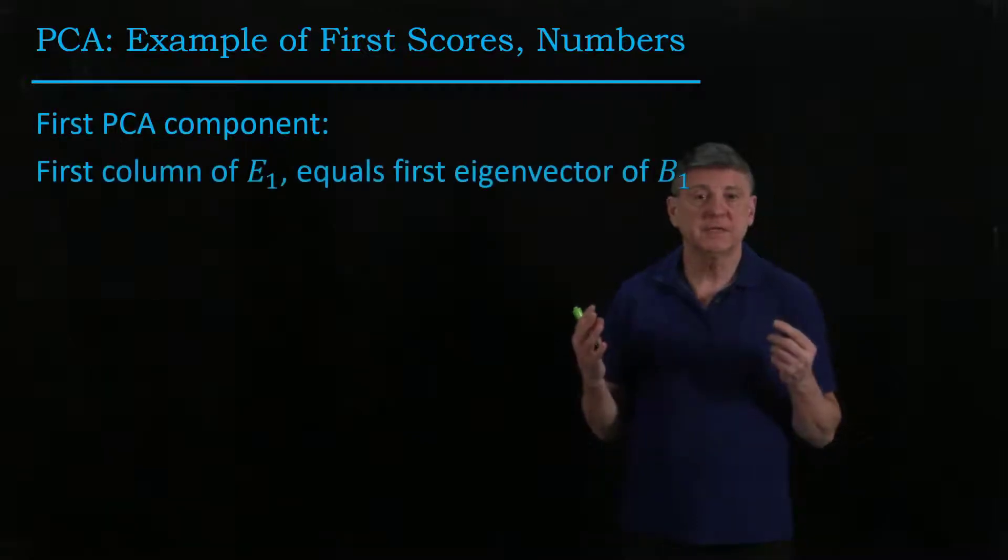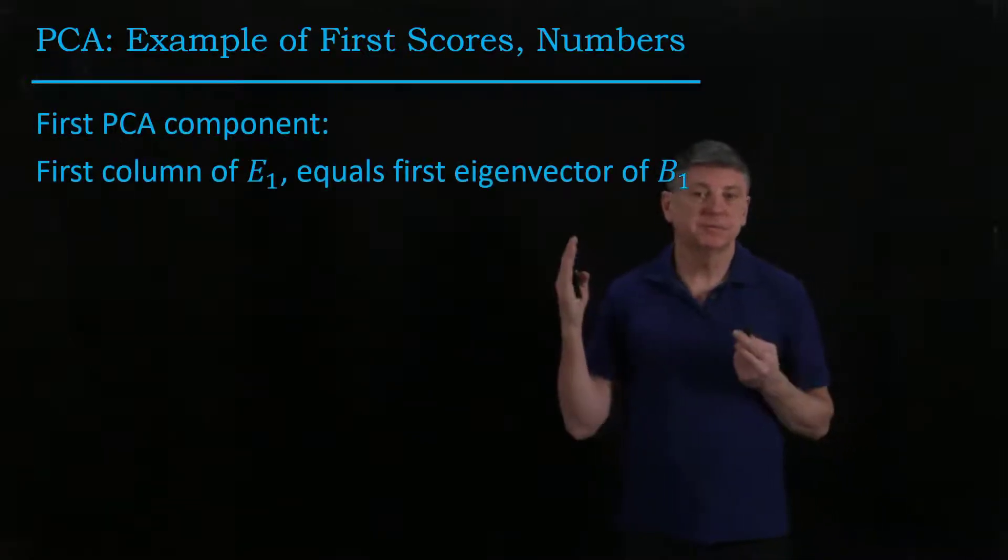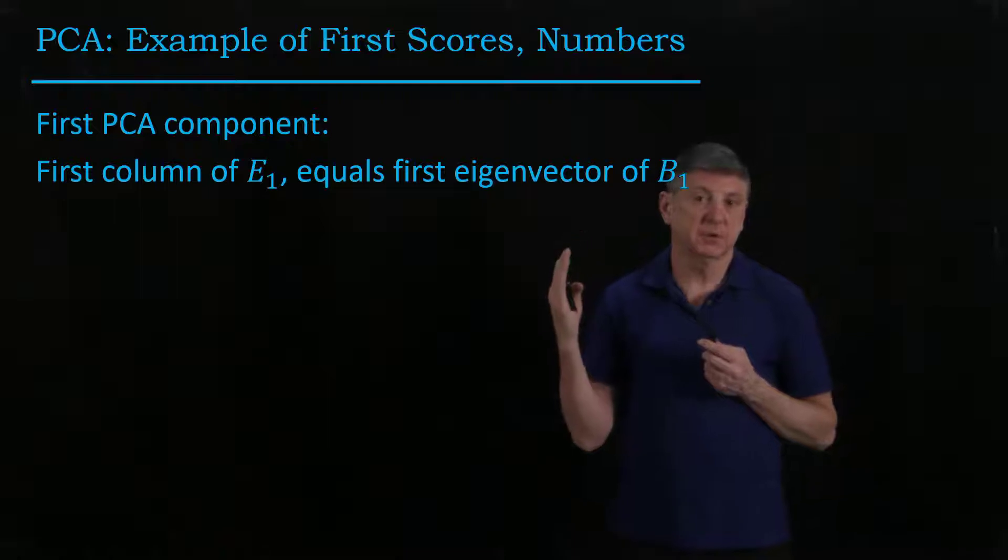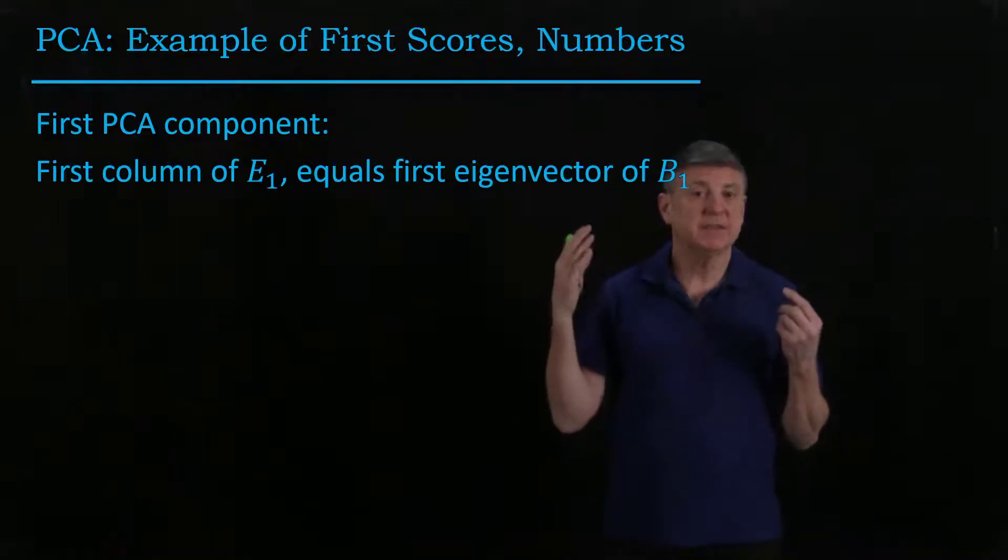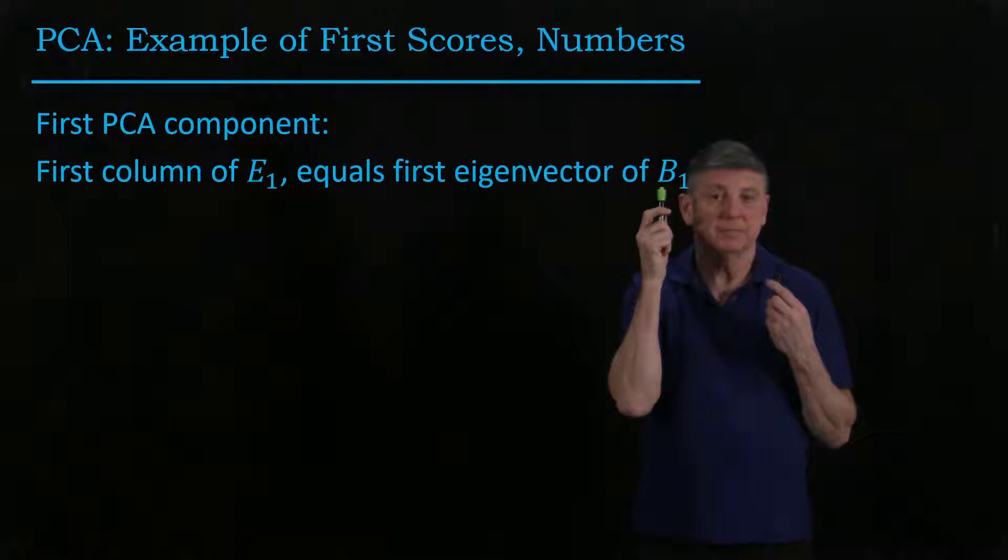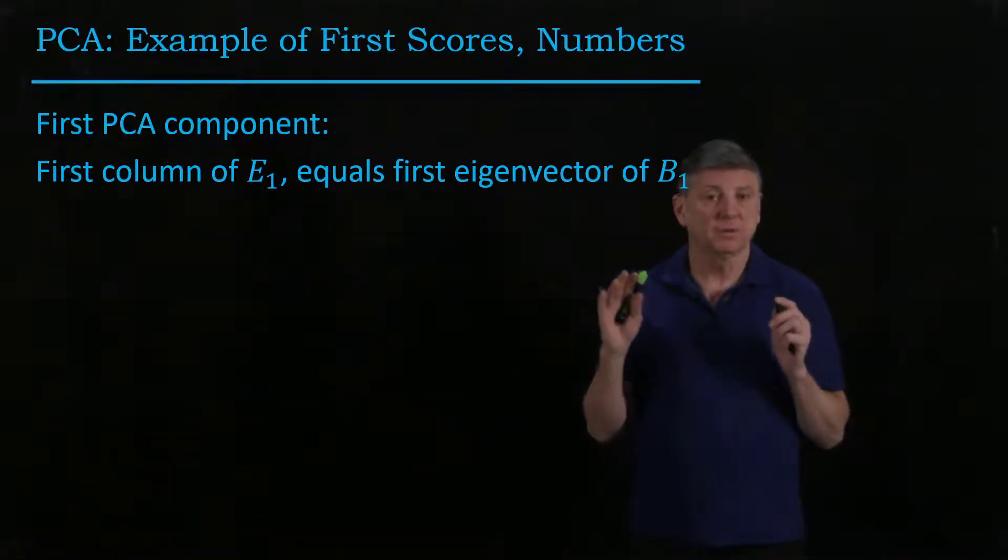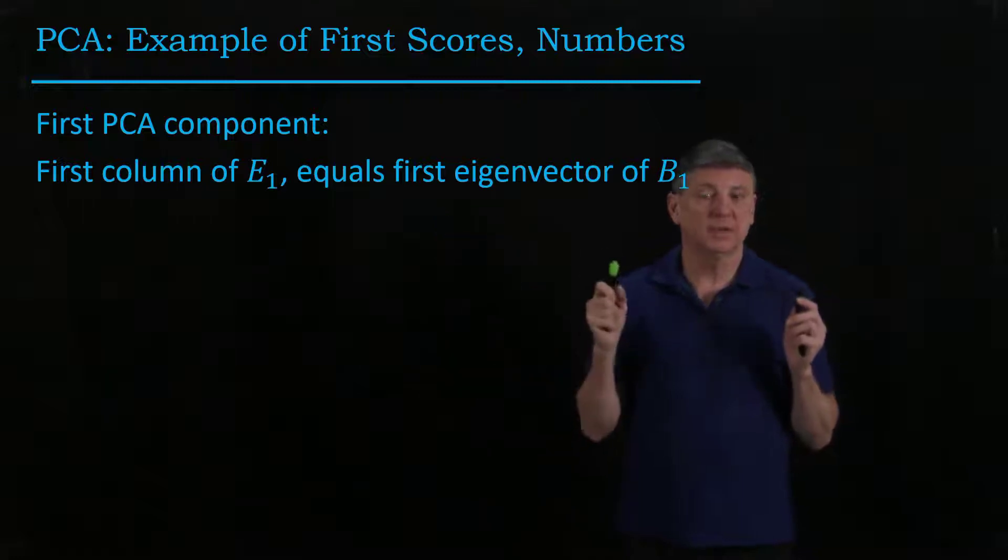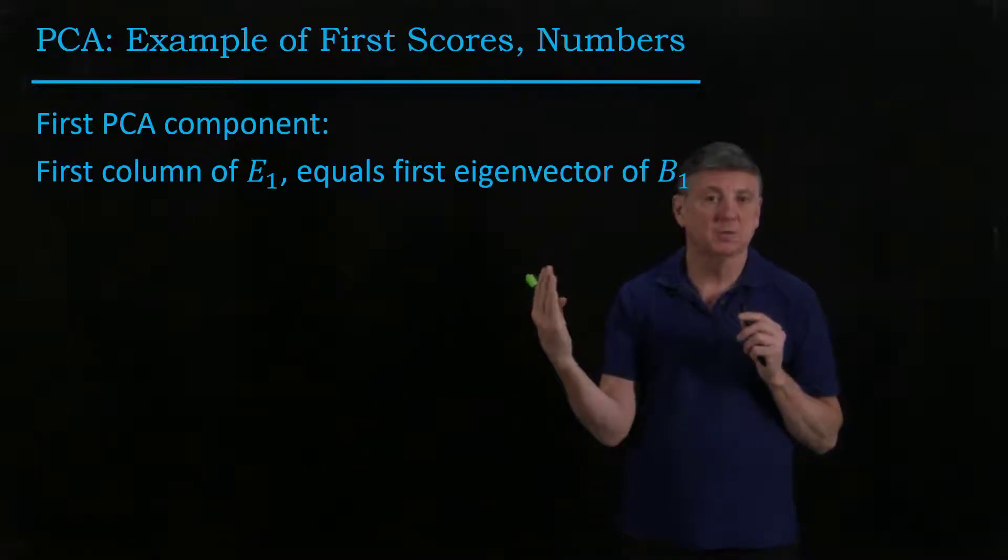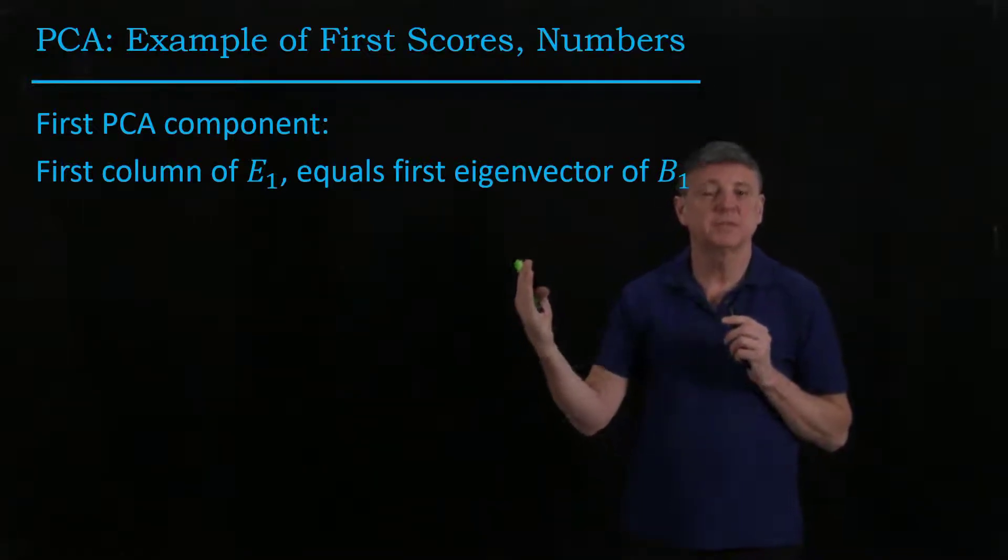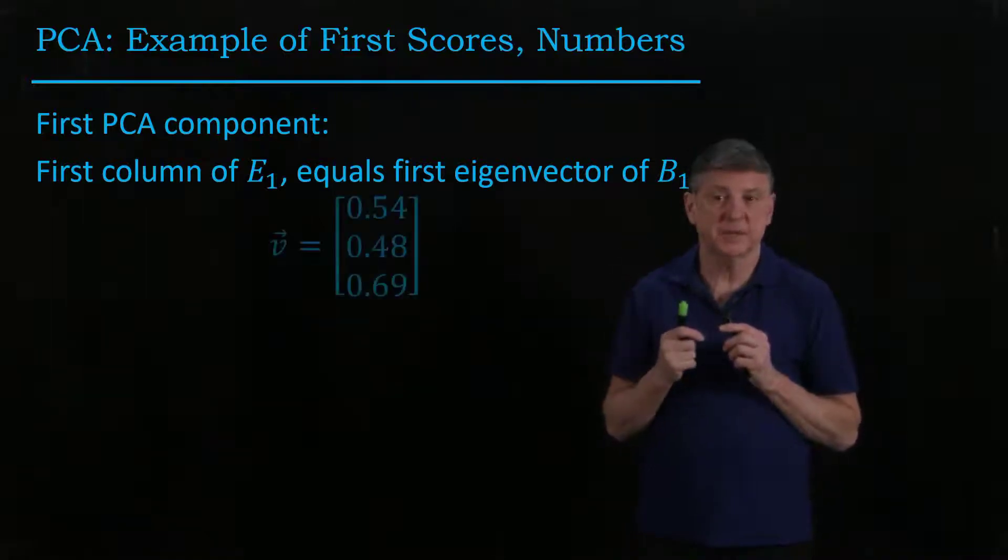The first PCA component is the first column of the spectral decomposition, and that's the same as the first eigenvector of the covariance matrix. It's important to remember all of these equalities—that the first column of the spectral decomposition and the first eigenvector are the same.